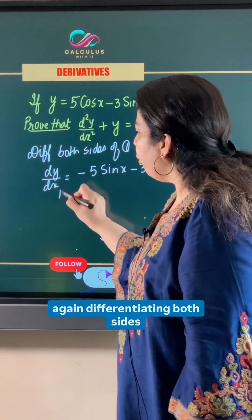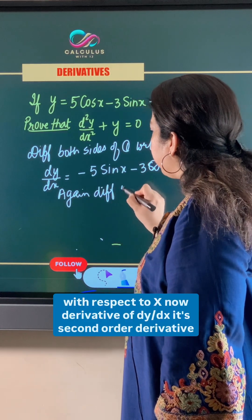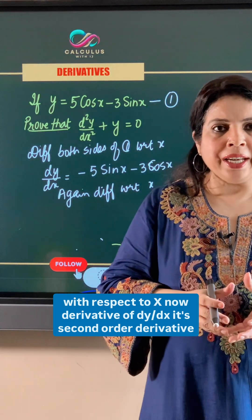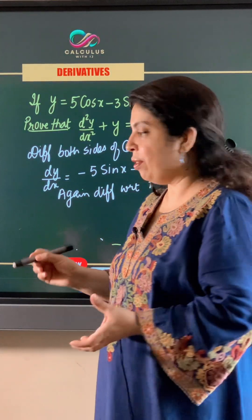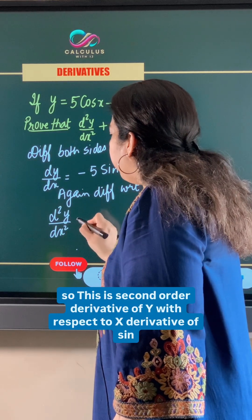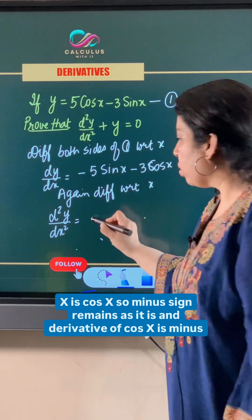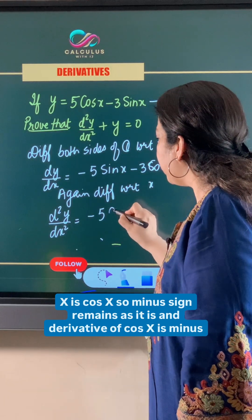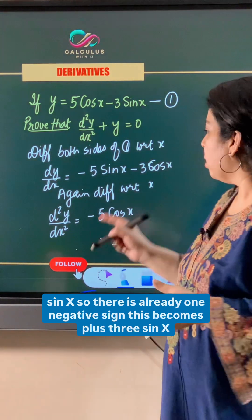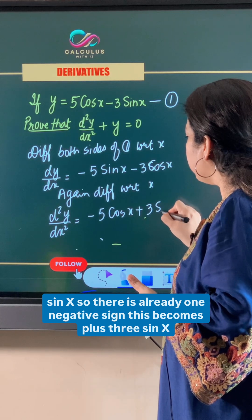Again differentiating both sides with respect to x: the derivative of dy by dx, its second order derivative, is d²y/dx². The derivative of sin x is cos x, so minus 5 sin x becomes minus 5 cos x. The derivative of cos x is minus sin x, and since there is already one negative sign, minus 3 cos x becomes plus 3 sin x.